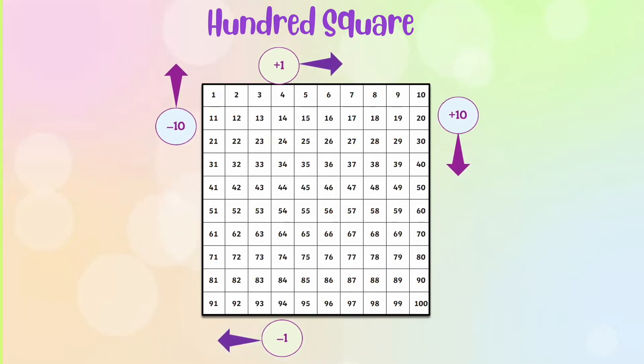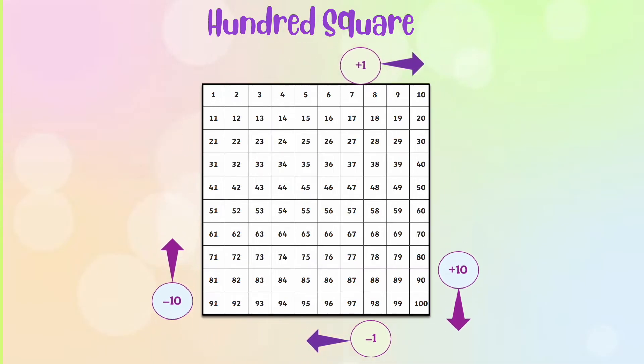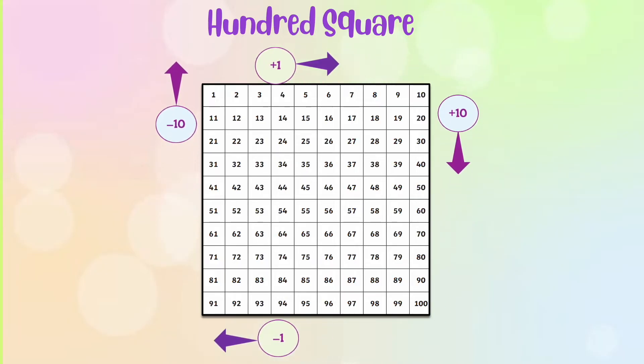When we want to move up we are going to subtract 10 and when we want to move down we are going to add 10.